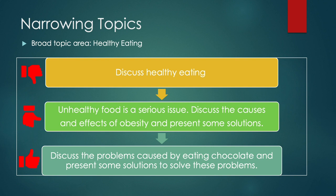We could think about what type of unhealthy food will be discussed — for example, fast food, soft drinks, and so on. For example, you could have: 'Discuss the problems caused by eating chocolate and present some solutions to solve these problems.' This is fine, much better. The question is appropriately narrowed.